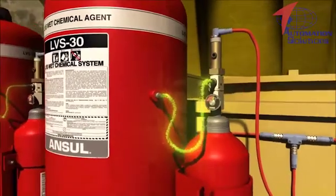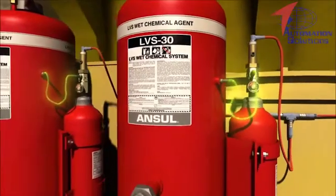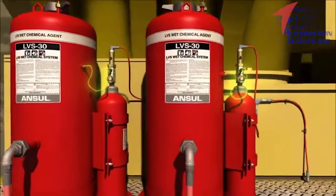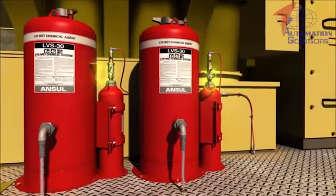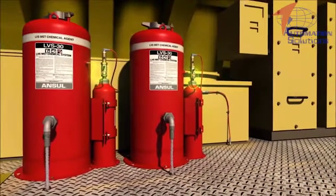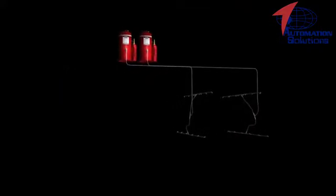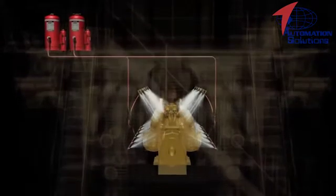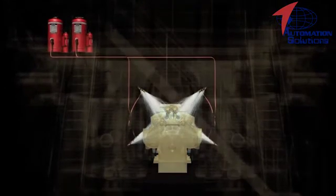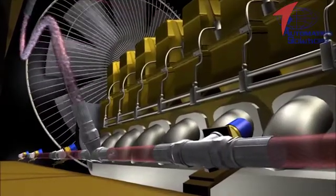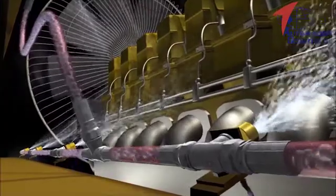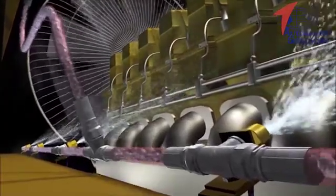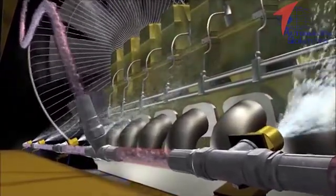When sufficient pressure is reached within the agent tank, the sealed burst disk assembly ruptures to release the LVS liquid agent. The LVS liquid agent is distributed throughout the hose network to nozzles designed to cover specific hazard areas. The agent is then released under constant pressure for the duration of the discharge. It quickly floods the protected area to suppress the fire and simultaneously cool the hazard to help prevent fire reflash.